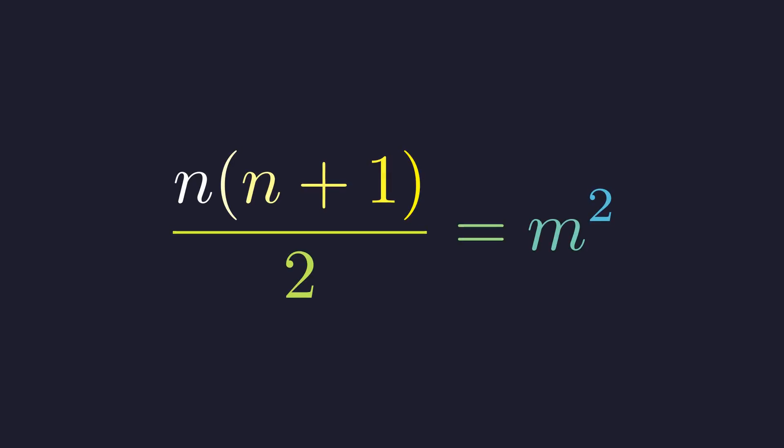We are looking for all integers n and m such that the nth triangular number is a perfect square. This problem seems simple, but its solution reveals a deep and elegant mathematical structure.